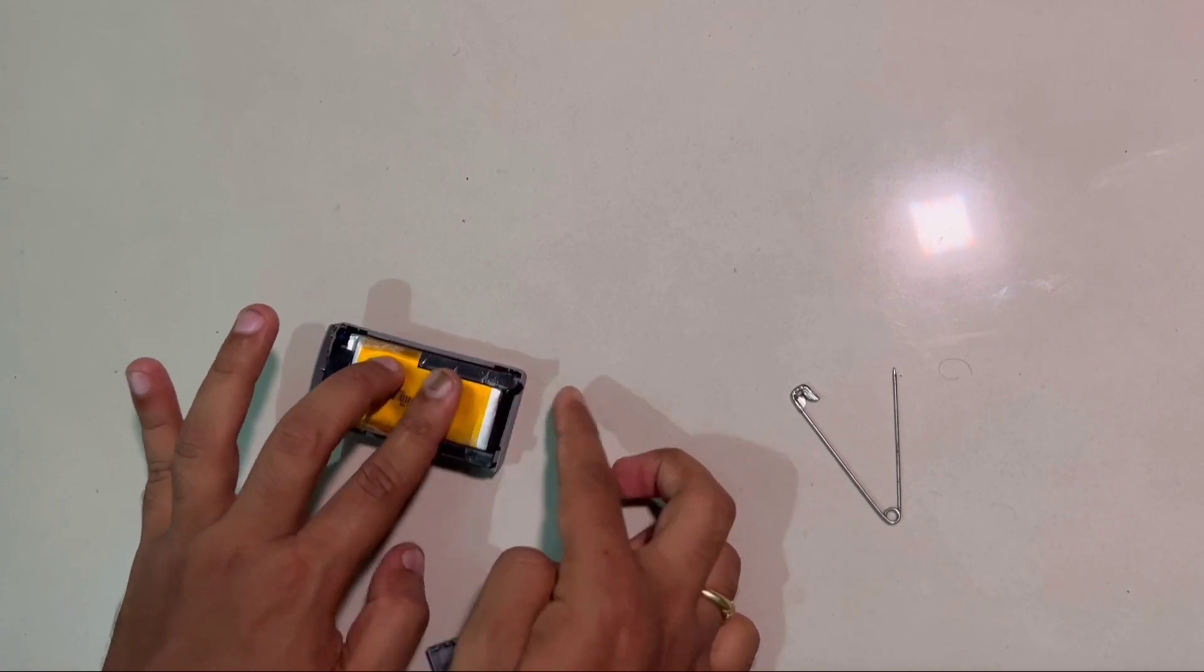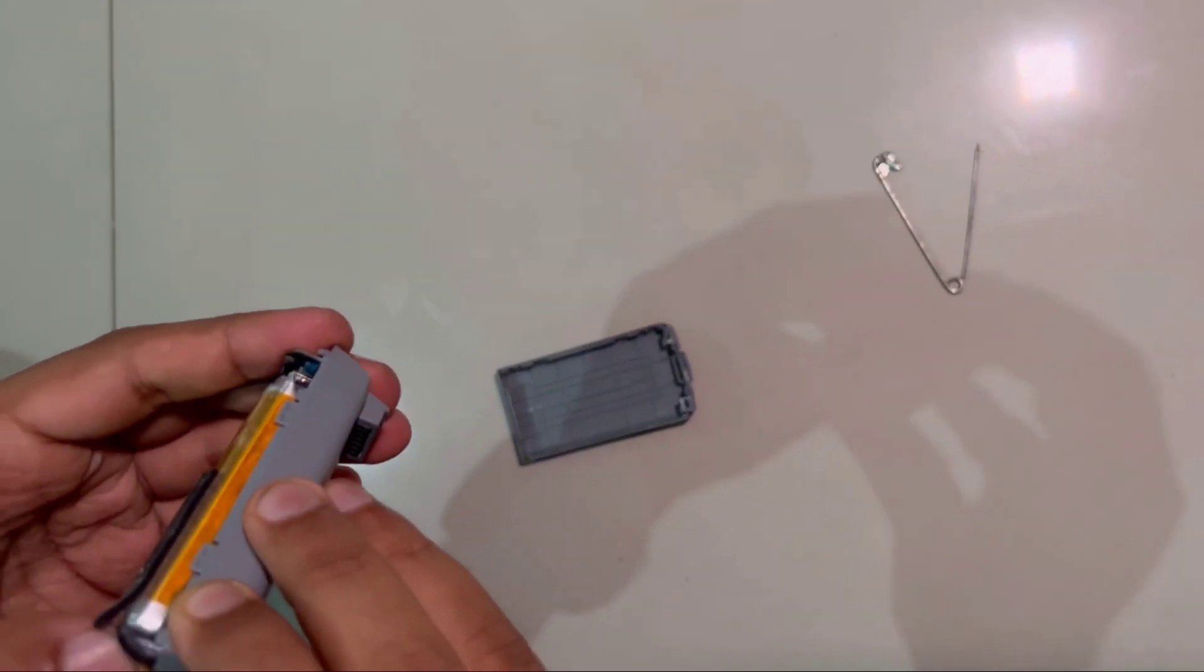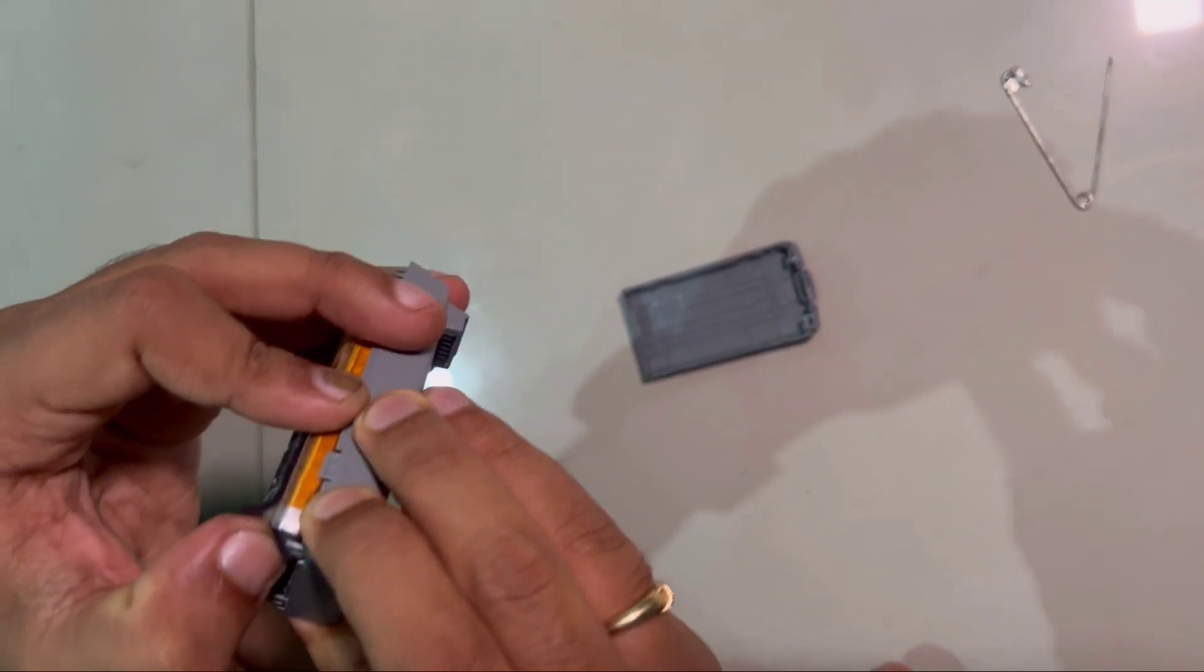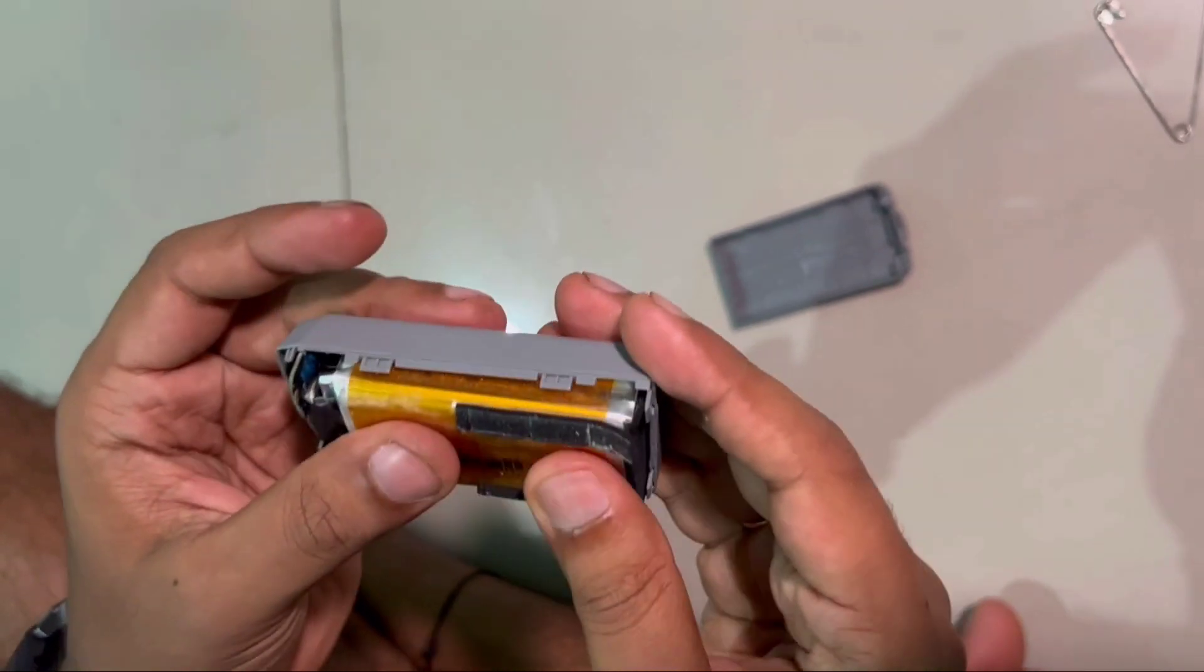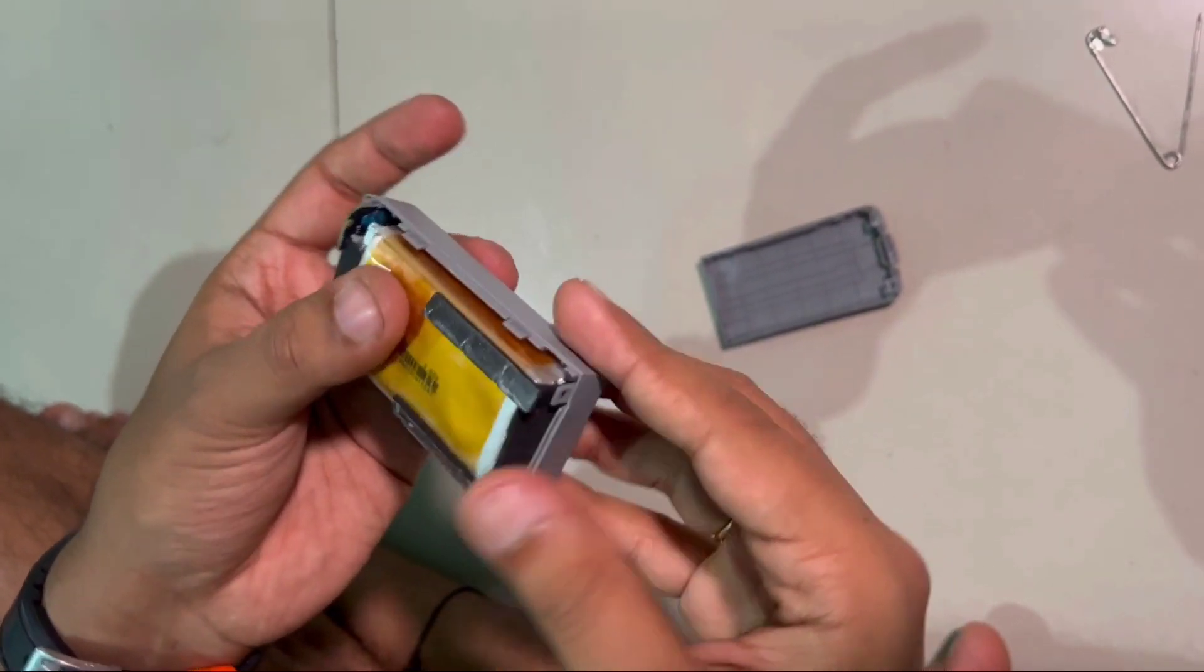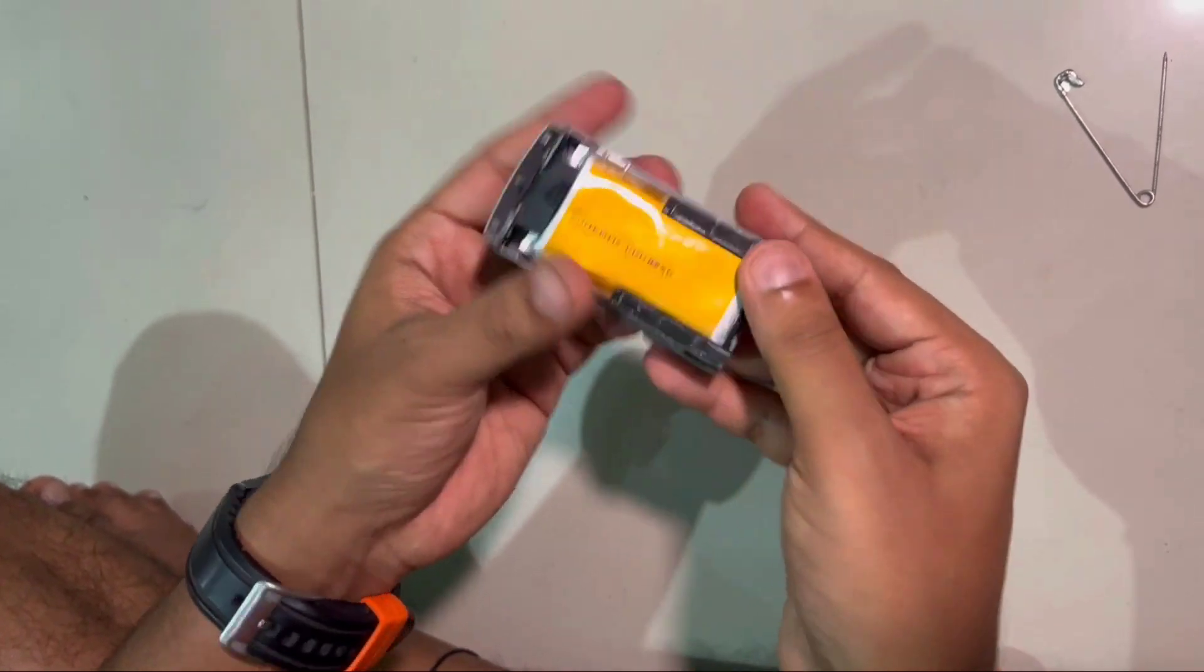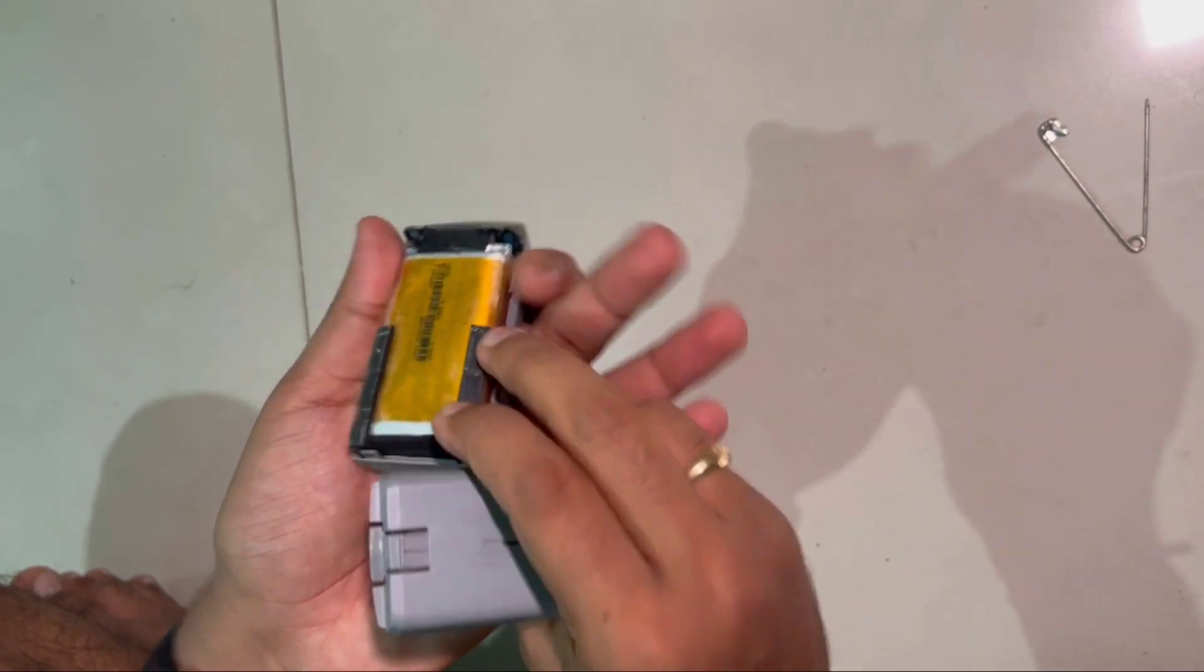After puncturing one cell, put the tape back. Ensure you apply it perfectly. Once the puncture is done, all the gas from that cell will go out and the battery will be flat. Make sure the tape is applied well so gas doesn't keep leaking.